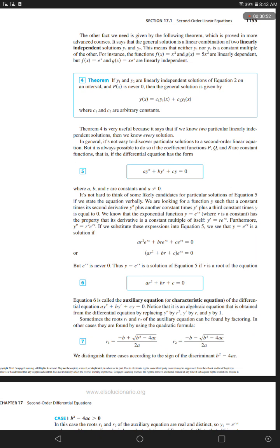Equation 4 is the theorem. If y sub 1 and y sub 2 are linearly independent solutions of equation 2 on an interval and P of x is never 0, then the general solution is given by y of x equals c sub 1 times y sub 1 of x plus c sub 2 times y sub 2 of x, where c sub 1 and c sub 2 are arbitrary constants.